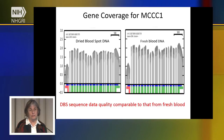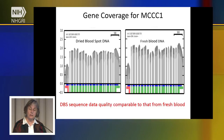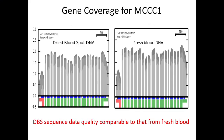One way to assess whether our DNA is adequate is to go ahead and do the whole exome sequencing. Here we're comparing a dried blood spot DNA sample to a sample obtained from fresh blood. What is depicted in these two graphs is the exome coverage, or number of individual reads that cover regions of one particular gene that is on our metabolic panel. You can see that the dried blood spot and the fresh blood give essentially comparable results.